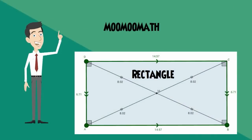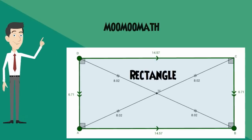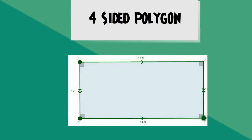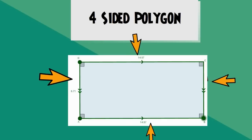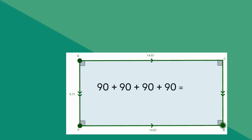In this video I'd like to talk about the properties of a rectangle. A rectangle is part of the quadrilateral family, which means it is a plain shape with four sides. In addition, it has several other properties. A rectangle is a four-sided polygon with opposite sides being parallel. A rectangle also has four right angles and the sum of these interior angles adds to 360 degrees.